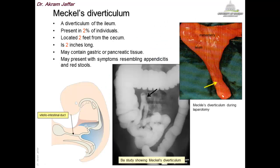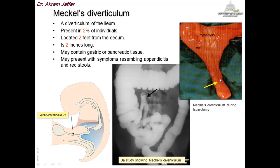Meckel's diverticulum is attached to the anti-mesenteric border of the ileum. It is present in about 2% of individuals, located about 2 feet from the cecum, and is about 2 inches in length. It may contain gastric and pancreatic tissue. It might get obstructed or perforated because of the presence of gastric or pancreatic tissue, and may present like acute appendicitis due to its close proximity to the location of the appendix.